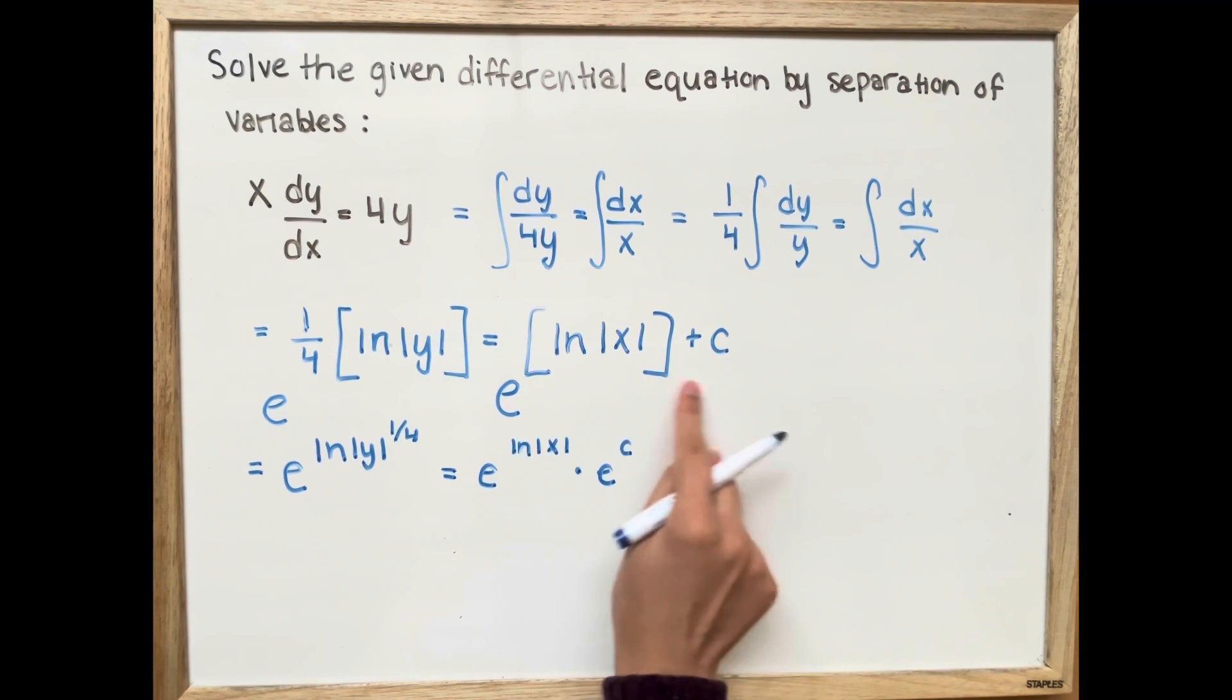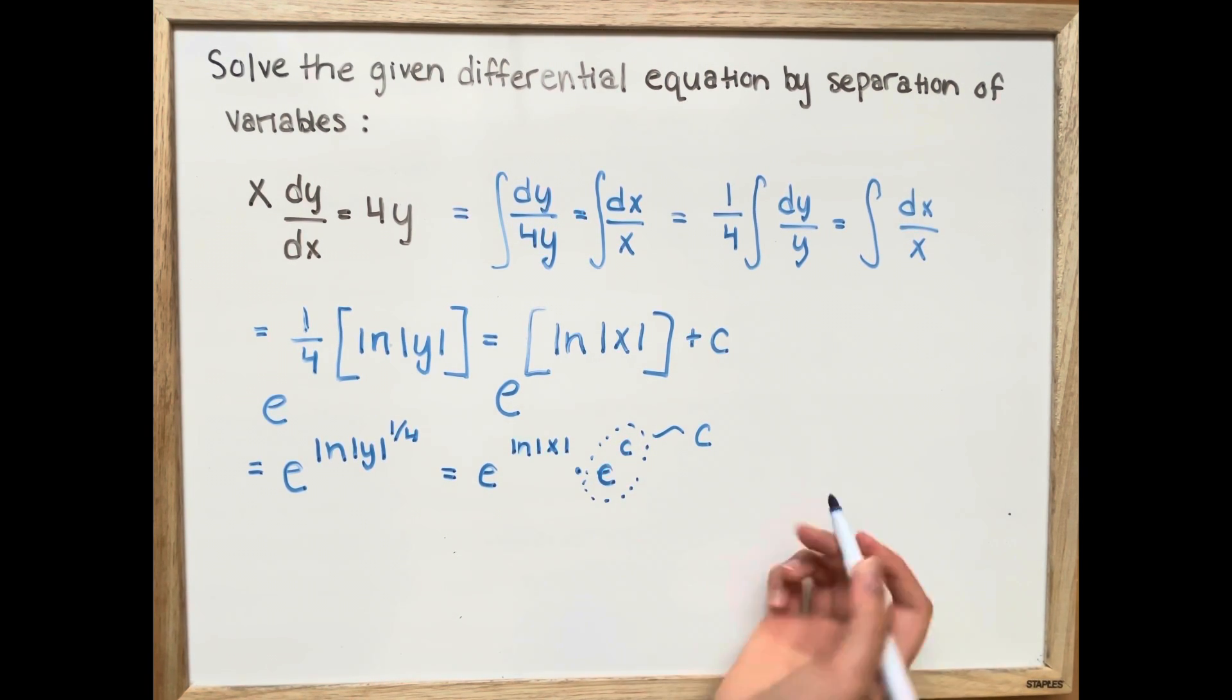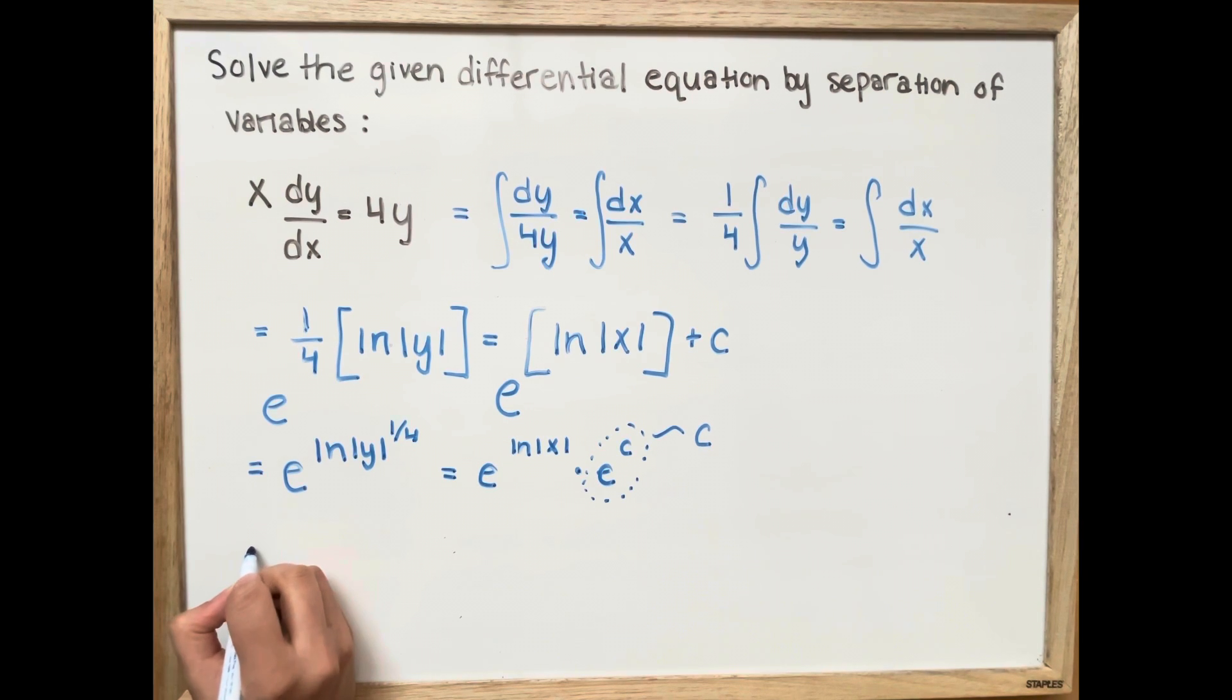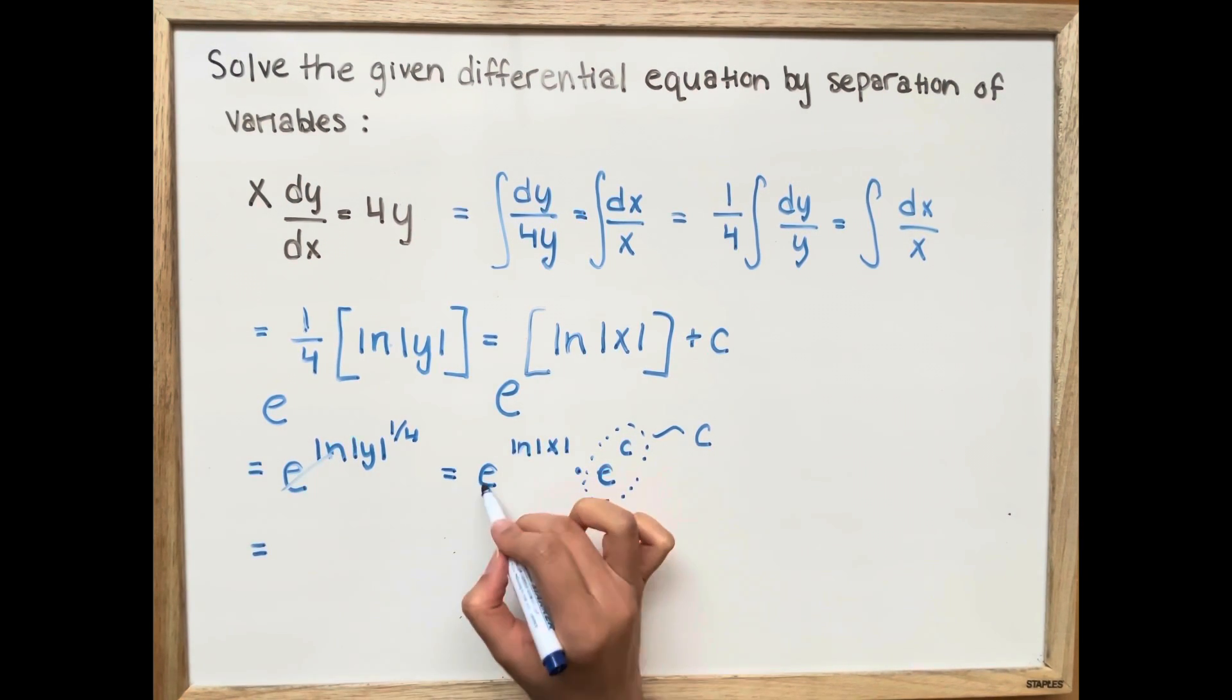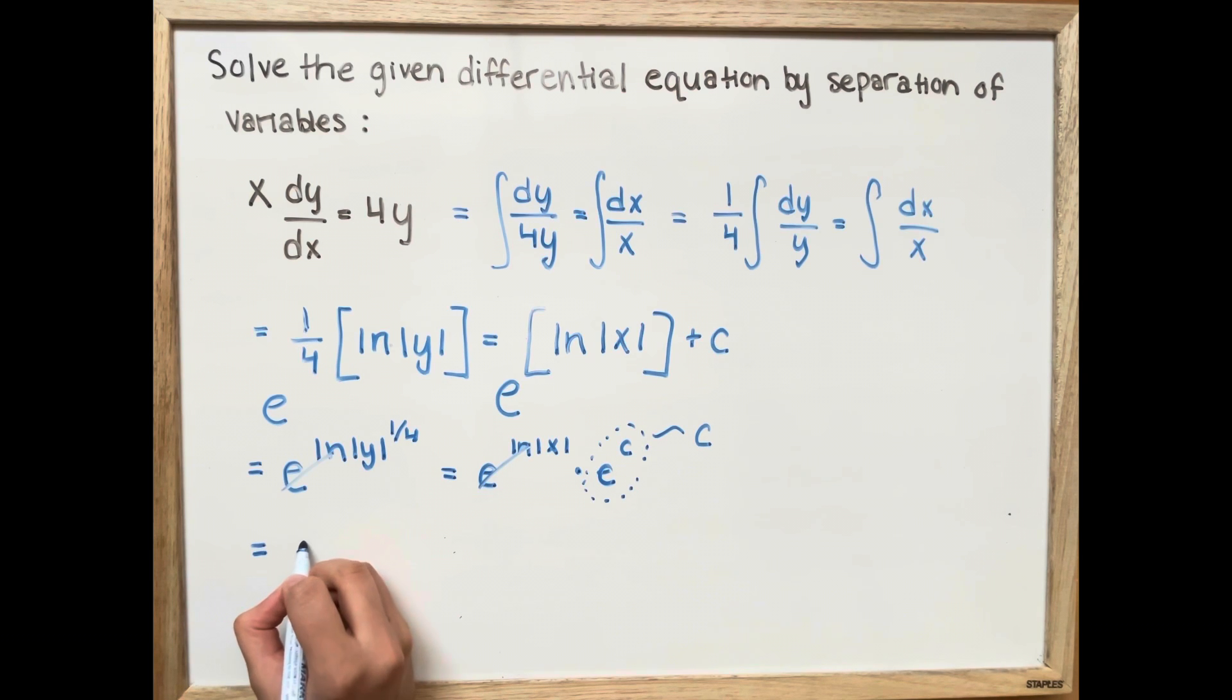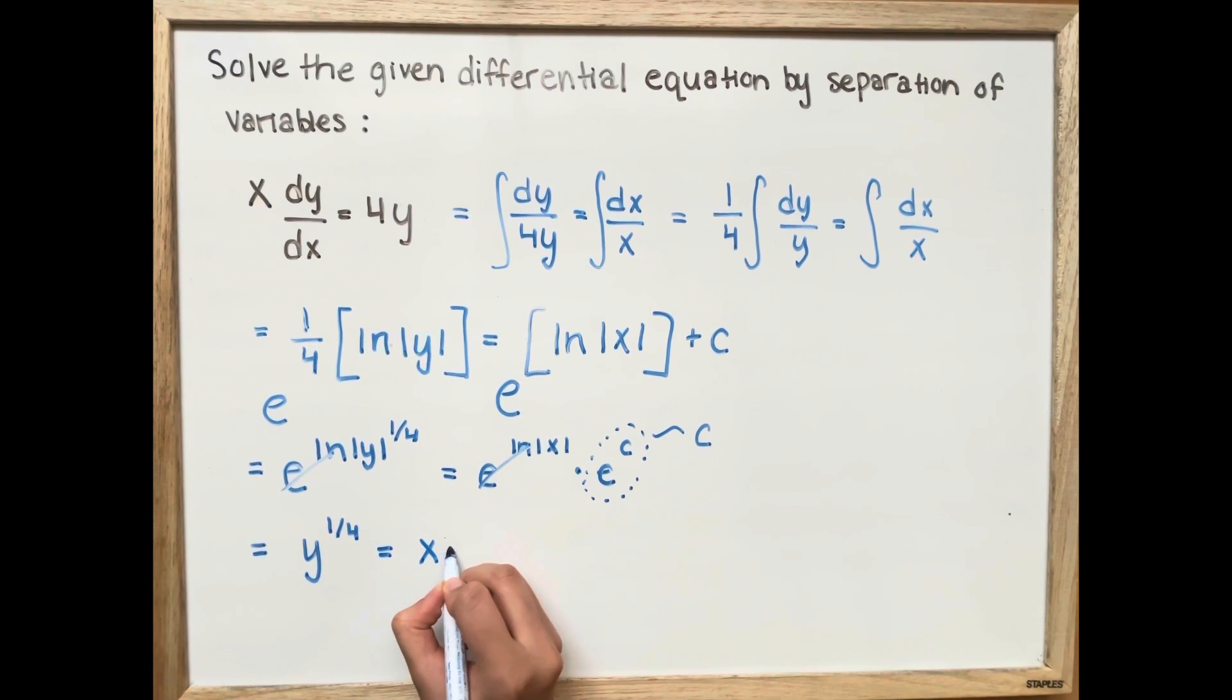Again, this is an exponential rule. And because e to the c is just a constant, we're going to label this as c. So now the e and the ln are going to cancel out, giving us just y to the power of 1 over 4 equal to x multiplied by c.